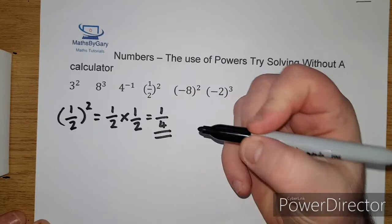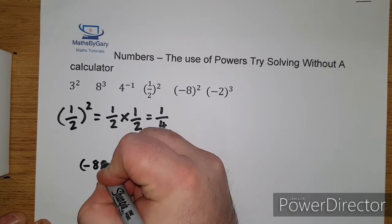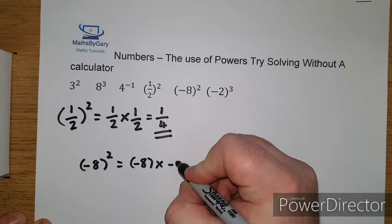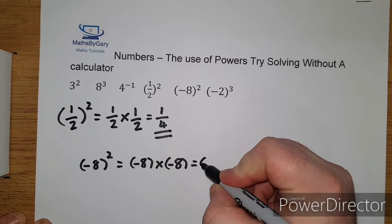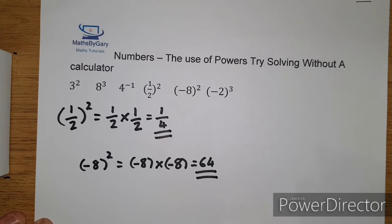Okay so we'll move on again to the next example which is minus 8 squared, which is simply minus 8 times minus 8. So we notice the minuses cancel and that gives us positive 64.